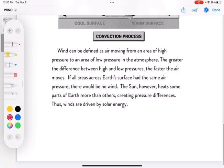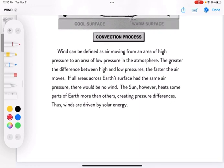Wind can be defined as air moving from an area of high pressure to an area of low pressure in the atmosphere. The greater the difference between high and low pressures, the faster the air moves. If all areas across the Earth's surface had the same air pressure, there would be no wind. Remember, wind is caused by pressure differences. The sun, however, heats some parts of the Earth more than others, creating pressure differences. Thus, winds are driven by solar energy.